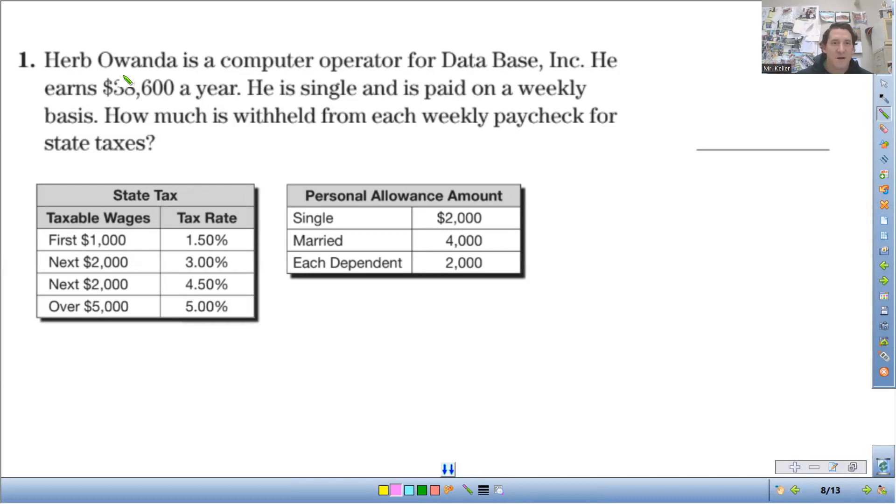We're going to simplify it a little bit here. He makes $38,000. He is single, and it doesn't say he has any dependents or anything. So that makes this first part easy. We just have to figure out his exemptions.